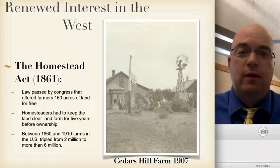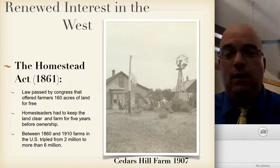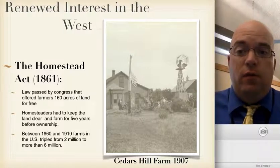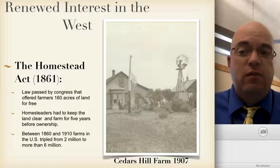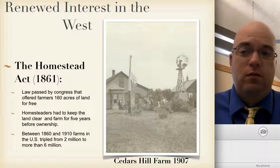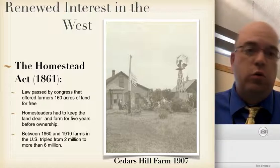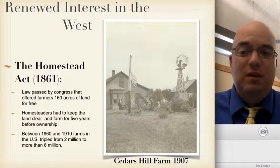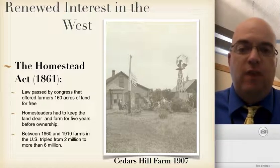So what was the Homestead Act? Abraham Lincoln had Congress pass a law in 1861 called the Homestead Act. This law offered 160 acres of land, for all intents and purposes free, to anyone willing to work it for five years. The homesteaders had to keep the land clear and farm it for five years before they received full ownership of it. Between 1860 and 1910, farms in the U.S. literally tripled from 2 million to over 6 million, so we had a huge migration to the West to take advantage of this basically free land.